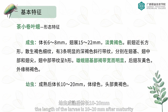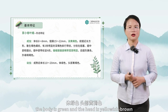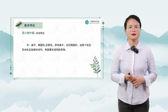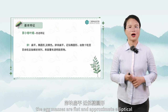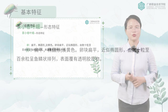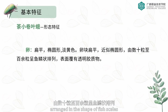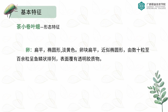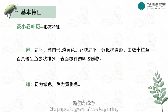The mature larvae are 10 to 20 millimeters in length. The body is green and the head is yellowish brown. The eggs are flat, elliptical, and pale yellow. The egg masses are flat and approximately elliptical, arranged in the shape of fish scales with 10 to over 100 eggs per mass. The surface is covered with transparent colloid. The pupae are green at the beginning and then turn yellowish brown.